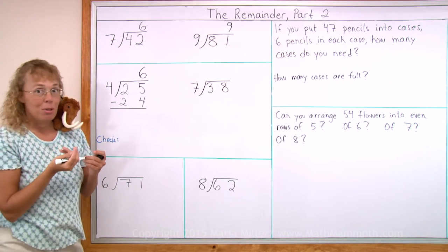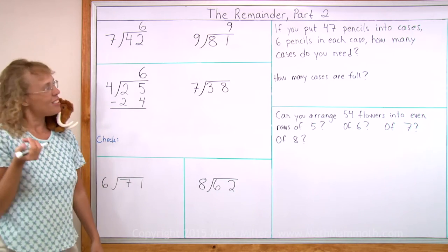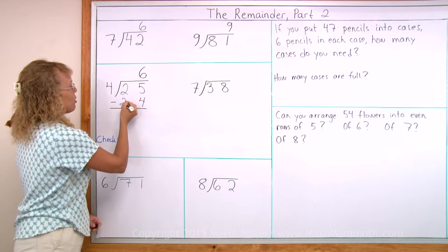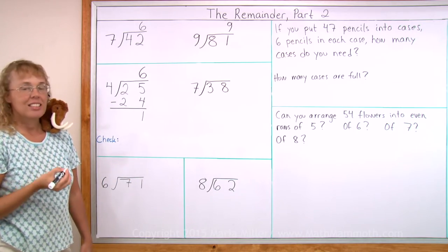And I write 24 here because now I'm going to subtract to find the remainder. Remember, the remainder was the difference between 24 and 25. But you can, of course, subtract to find the difference. So 25 minus 24 equals 1. So the answer is 6 remainder 1.